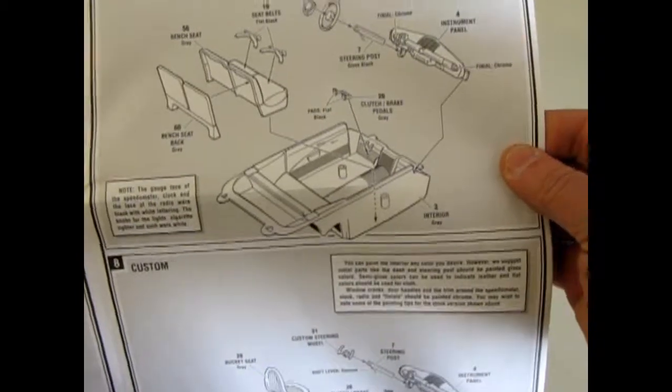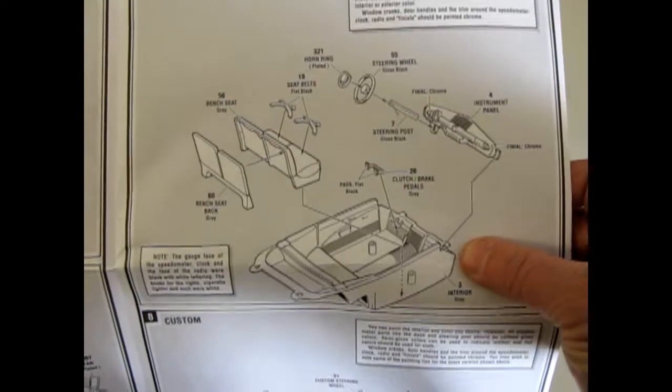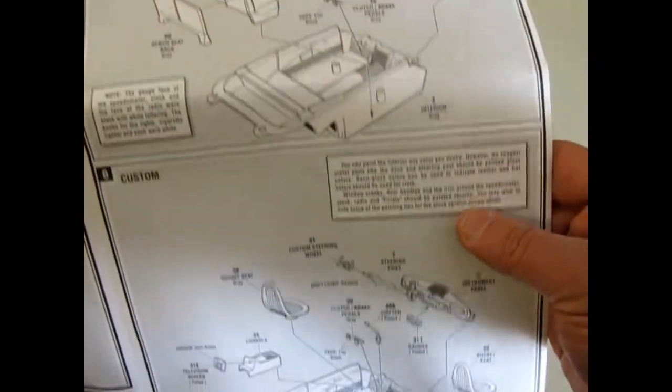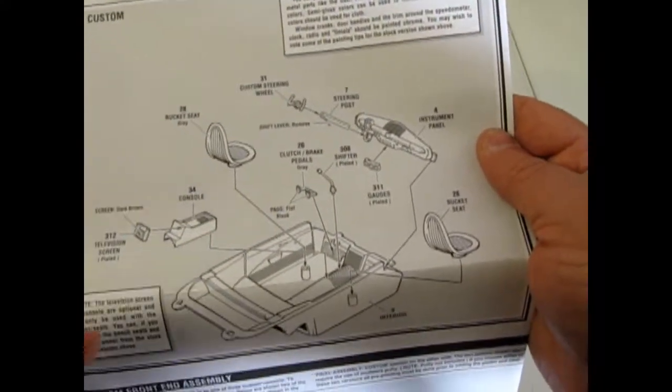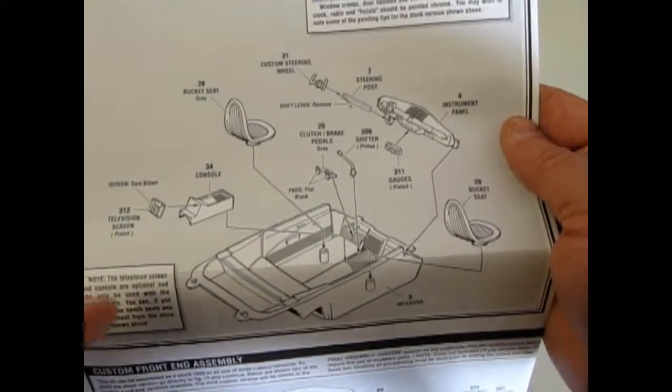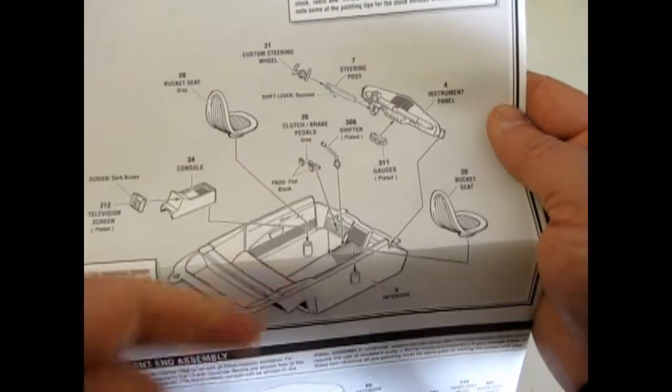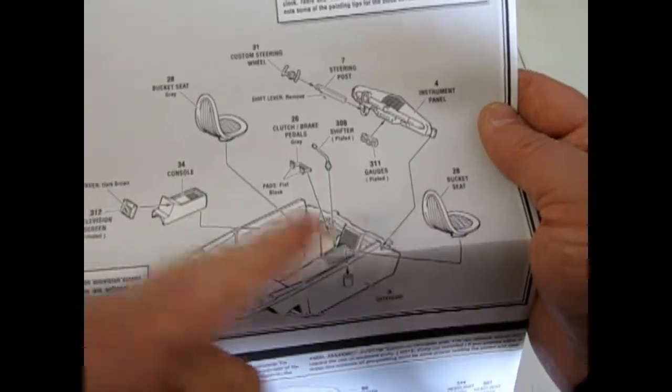Then we get into our stock interior, which has all the features that you would find, including some seat belts, which would have been optional back then. And here is our custom interior. And as you can see, you get a console with a TV screen on it, gauges for your dashboard, and then these nice Star Trek style bucket seats.